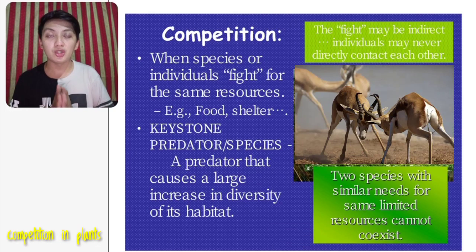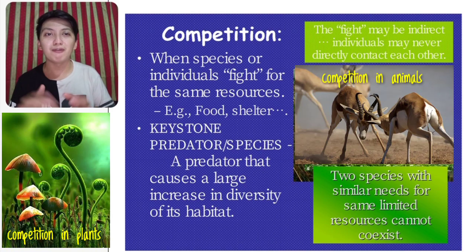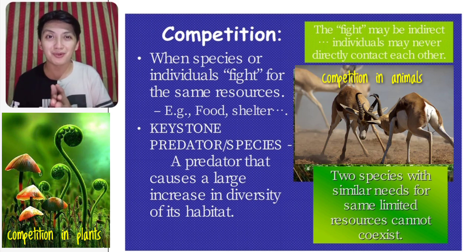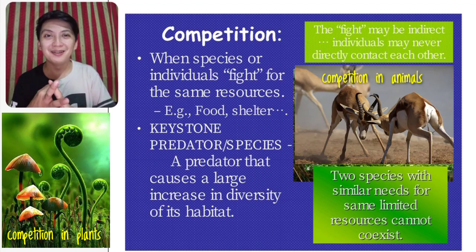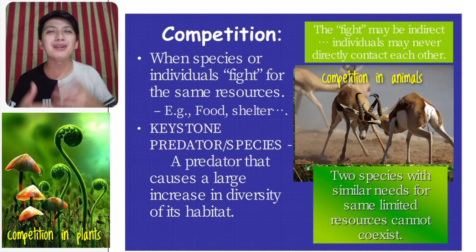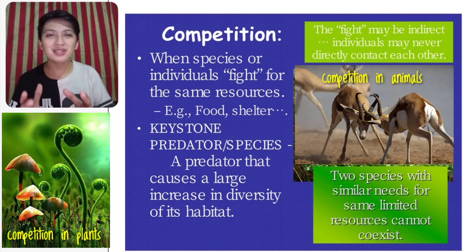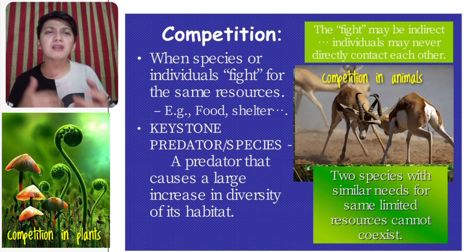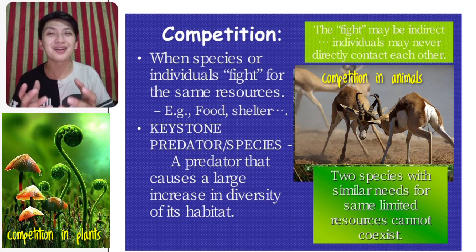Let us now discuss competition. Competition occurs when species or individuals fight over the same resources — for example, food, shelter, and even mates. There is a lot of competition in the ecosystem and it happens all the time. Remember, a keystone predator can cause a large increase in the diversity of its habitat. Two species with similar needs for the same limited resources cannot coexist.